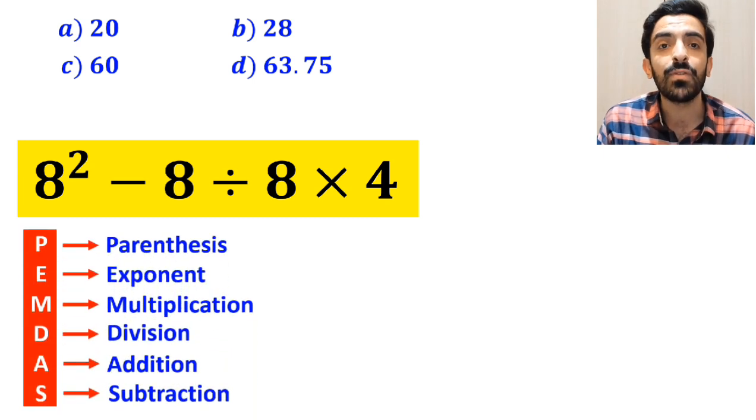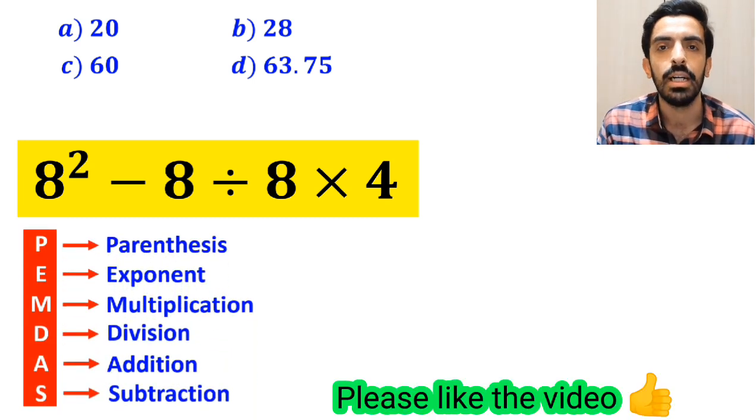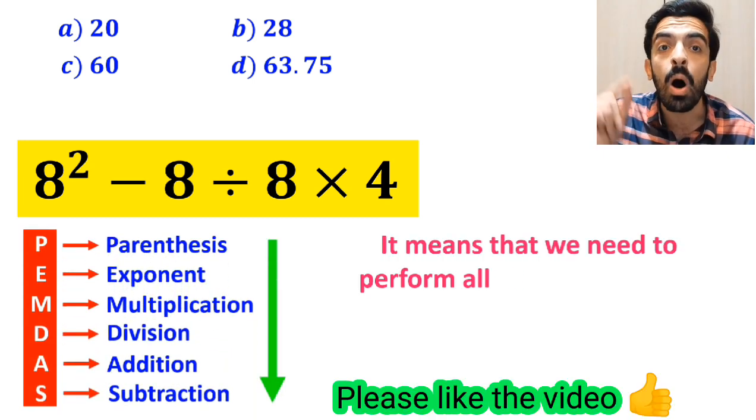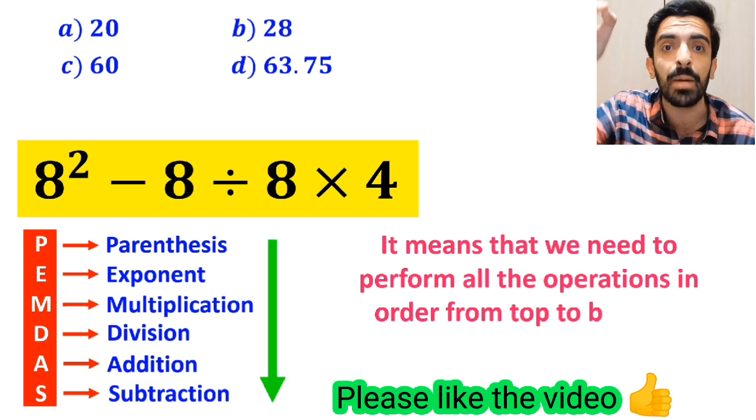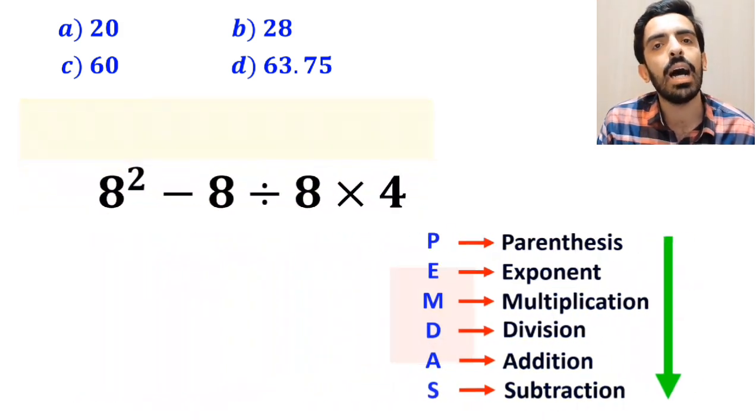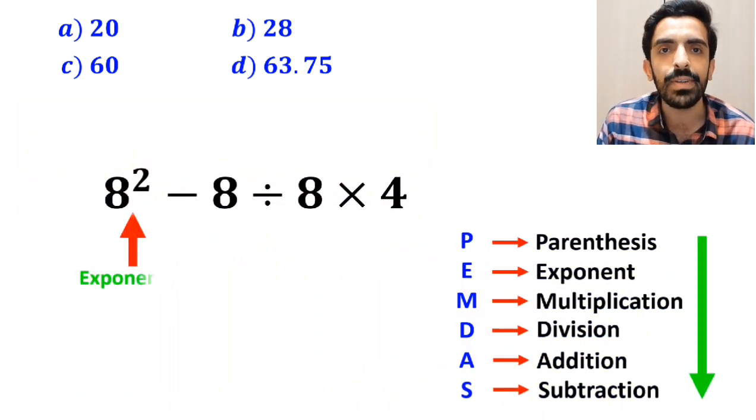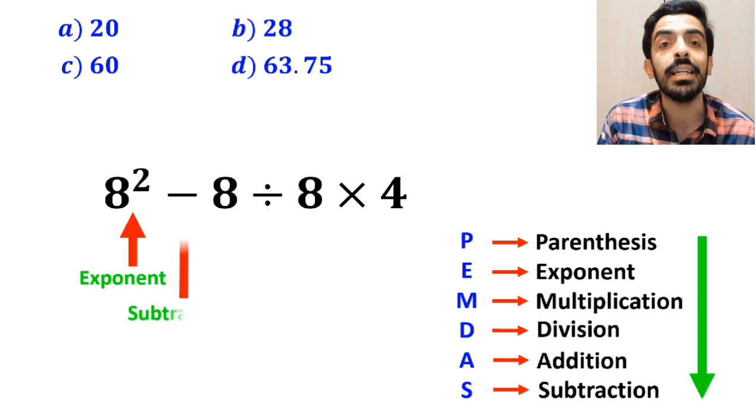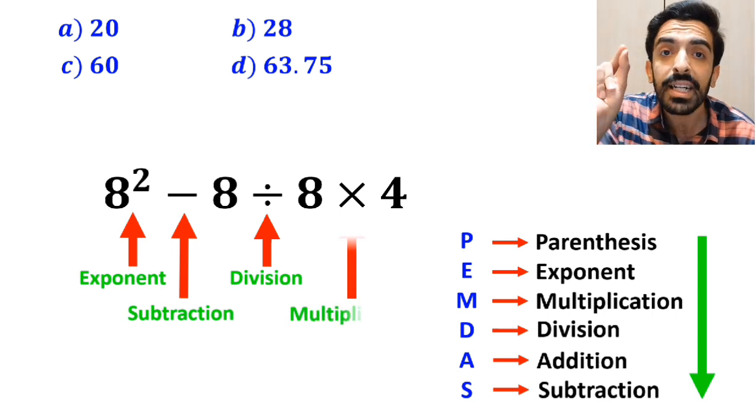To solve this problem, we must follow the PEMDAS rule. It means that we need to perform all the operations in order from top to bottom. Alright, as you can see on the screen, in this expression, first we have an exponent, then a subtraction sign, followed by a division, and finally a multiplication.